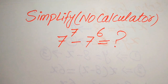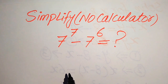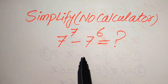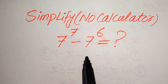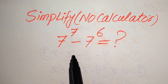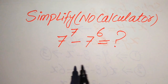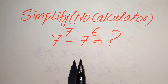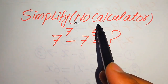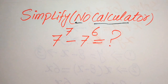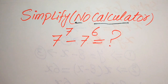Welcome. We're going to solve a nice algebra problem: 7 to the power of 7 minus 7 to the power of 6. We need to write this algebraic expression in its lowest form. A calculator is not allowed, so we need to show all of the working. If you have another method in mind, please don't hesitate to write it in the comment section.